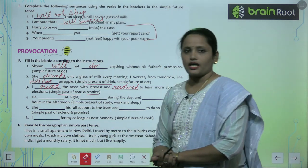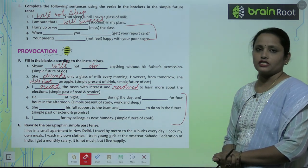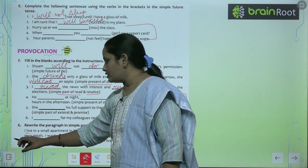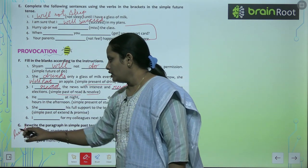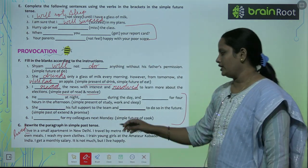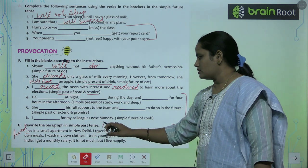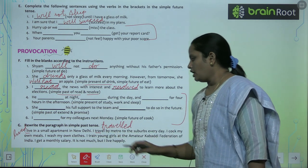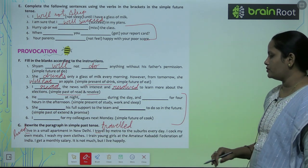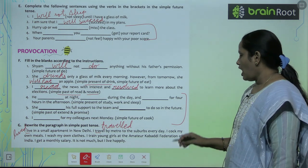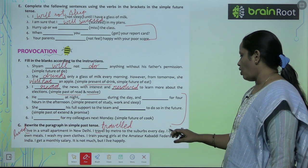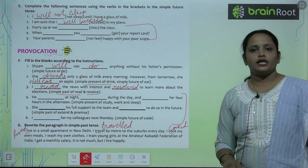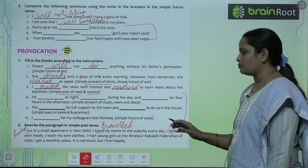Now let's move on to Exercise G — rewrite the paragraph in simple past tense. 'I live in a small apartment in New Delhi' becomes 'I lived in a small apartment in New Delhi.' 'I travel by metro to the suburbs every day' becomes 'I travelled by metro.' 'I cook my own meals' becomes 'I cooked my own meals.' Like this, children, transform the paragraph into simple past tense.